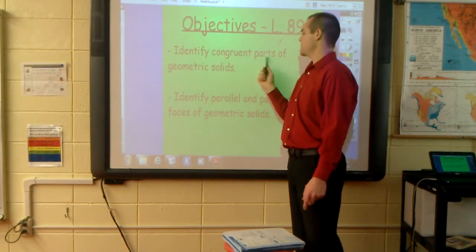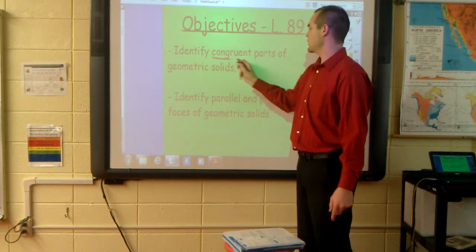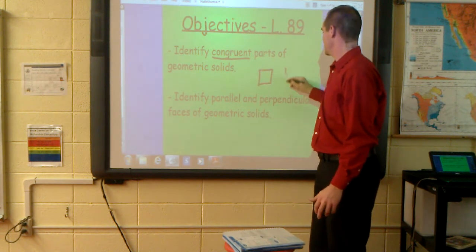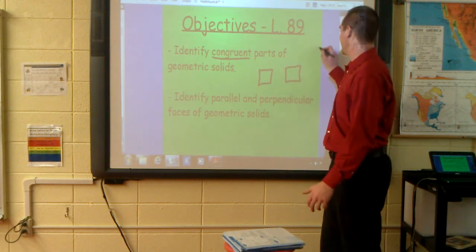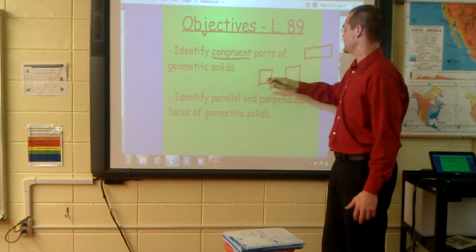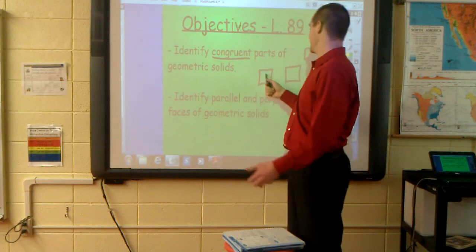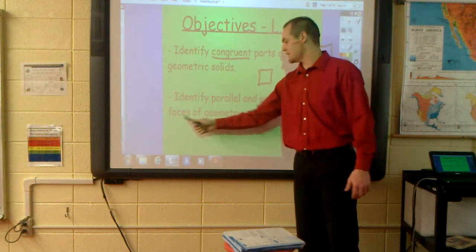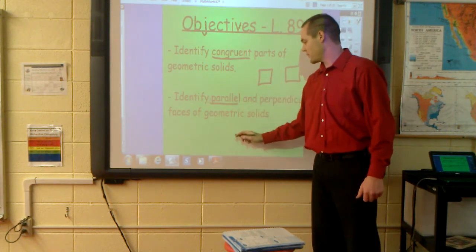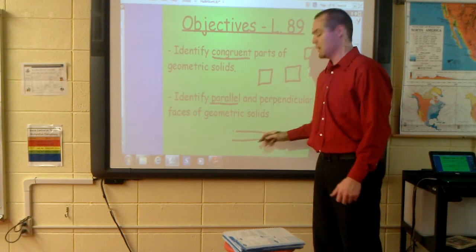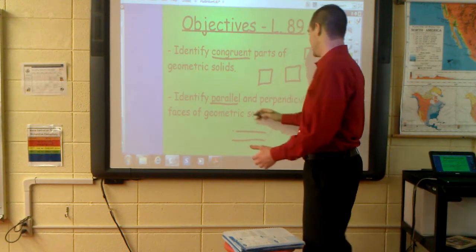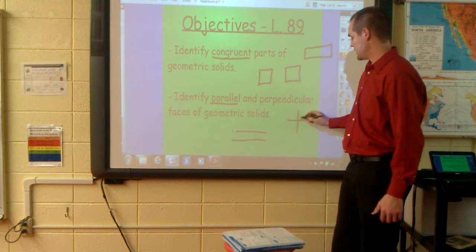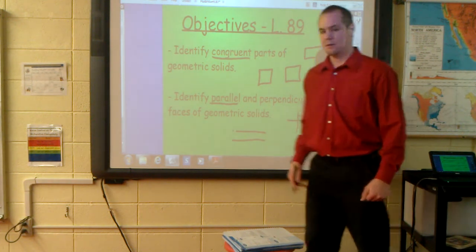First, we will identify congruent parts of geometric solids. Congruent means two shapes are identical — these two squares are congruent, but this square and this rectangle are not. Second, we'll identify parallel and perpendicular faces of geometric solids. Parallel lines continue in the same direction without ever touching, and perpendicular faces create a perfect 90-degree angle.